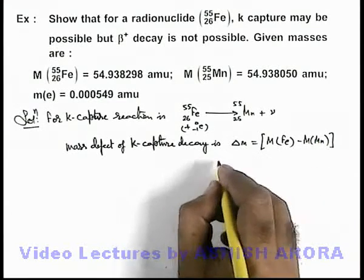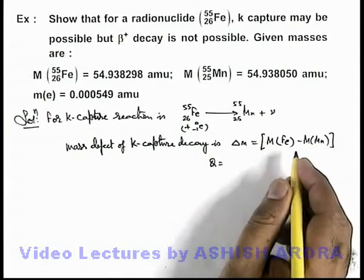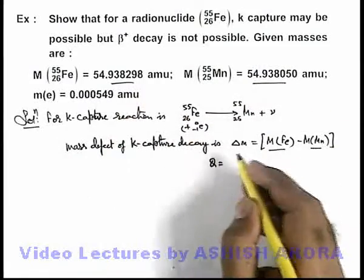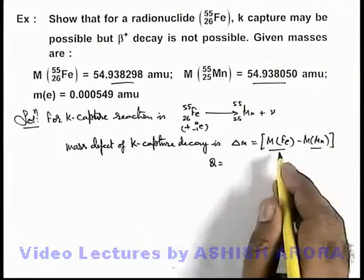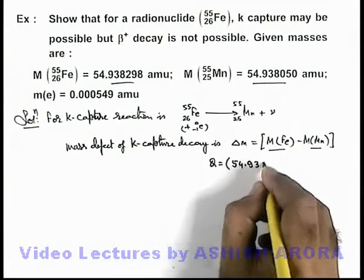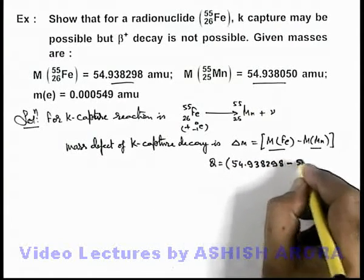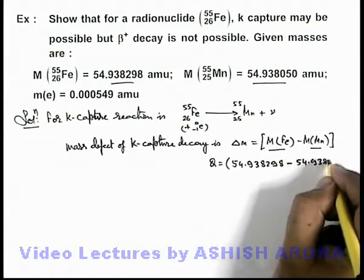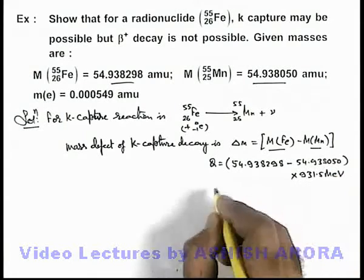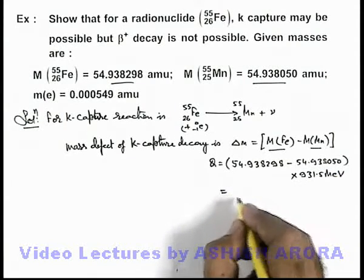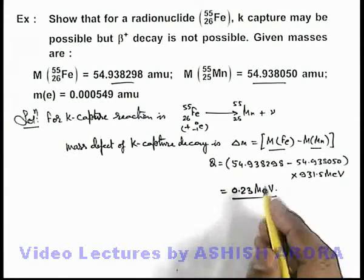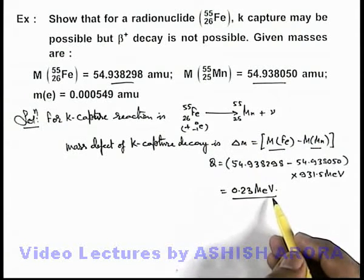The Q-value can be written as delta M times 931.5. Substituting the values of iron and manganese given, we get (54.938298 minus 54.938050) times 931.5 MeV. Finally, the result is 0.23 MeV. That means in K-capture, the energy released will be 0.23 million electron volts.